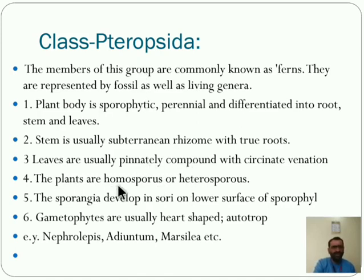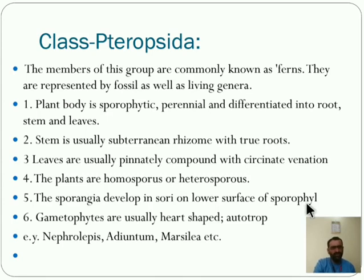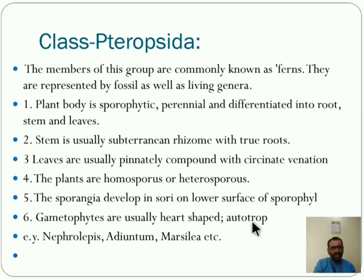The plants are homosporous or heterosporous. Sporangia develop in sori — a globular protective structure — on the lower surface of the sporophyll. That means on the spore-producing leaves, sori are developed, and in those sori, sporangia develop. Gametophyte is usually heart-shaped and autotrophic. Examples: Nephrolepis, Adiantum, and Marsilea.